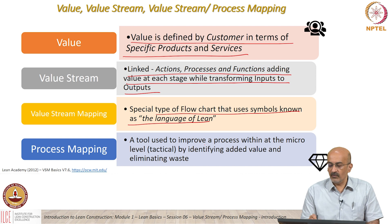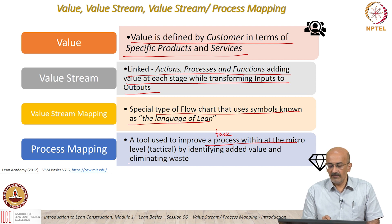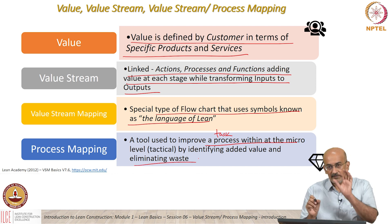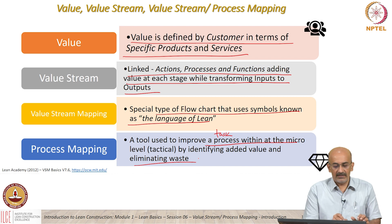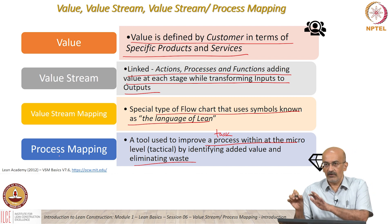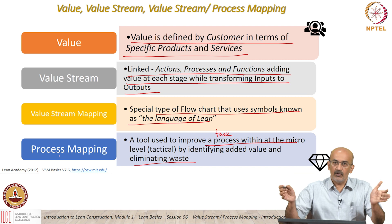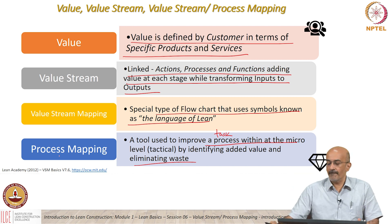Process mapping is more detailed — a tool used to improve a process or a task. It works at the micro level by identifying added value and eliminating waste. So when we say process mapping, it is more at a micro level. When we say value stream mapping, it can be more at a macro level.